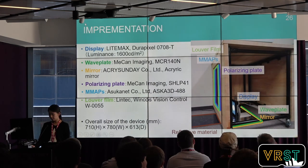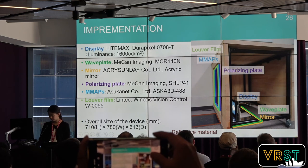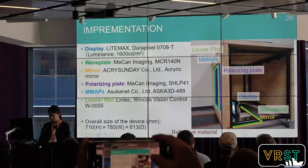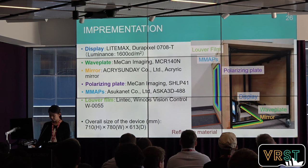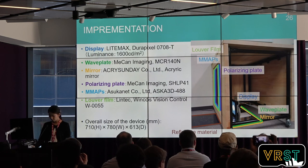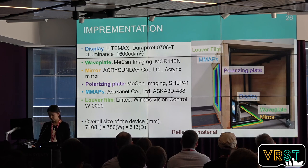This figure shows the implemented proposed system. We used a display with horizontal polarization and high brightness, and used ASCA 3D as the MMAPS. These optical elements were placed in a wooden box for easy installation and ambient light shielding. The overall size is 710 mm height, 780 mm wide, and 630 mm depth.